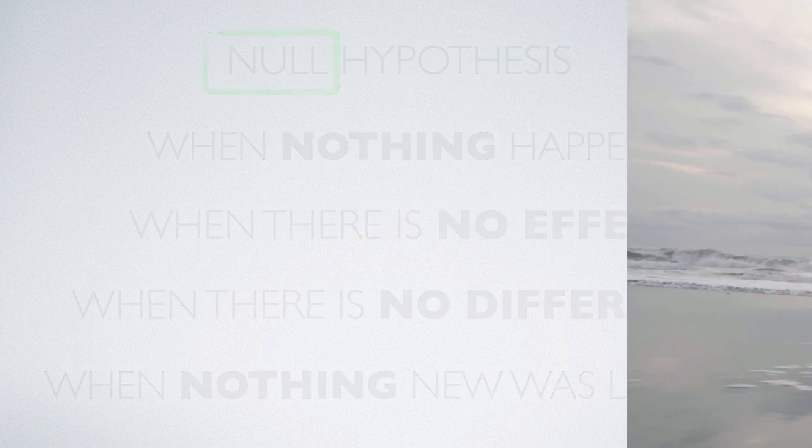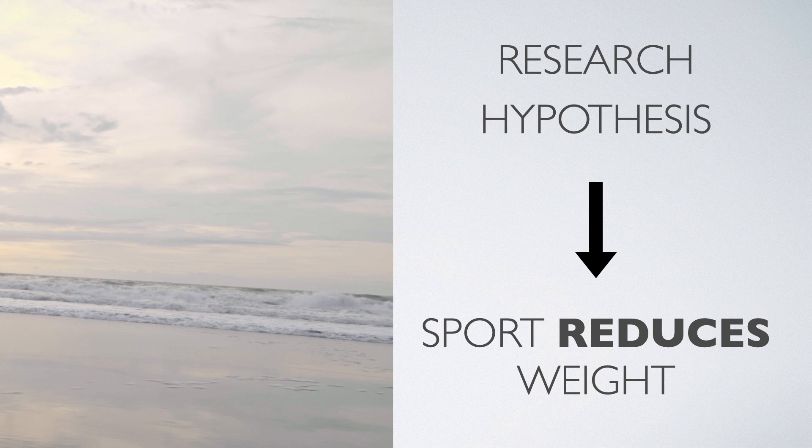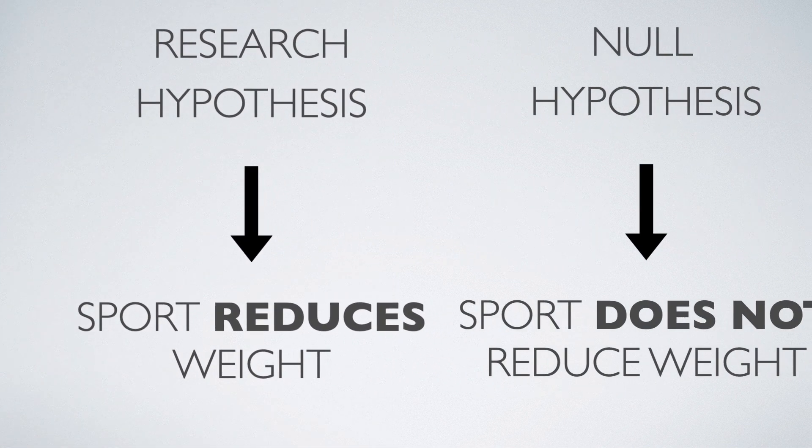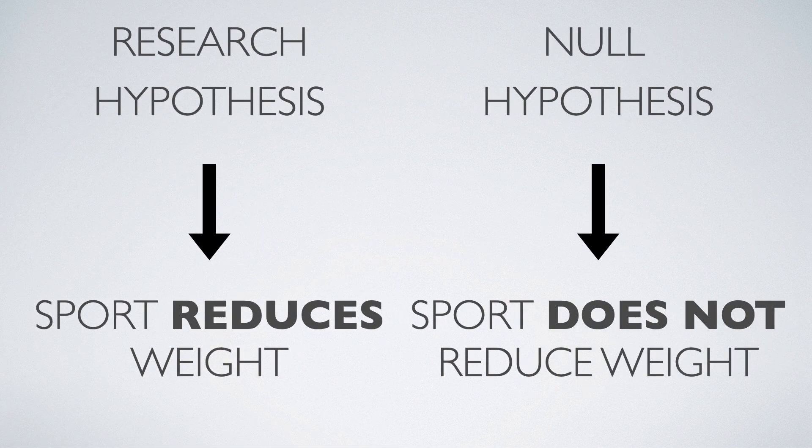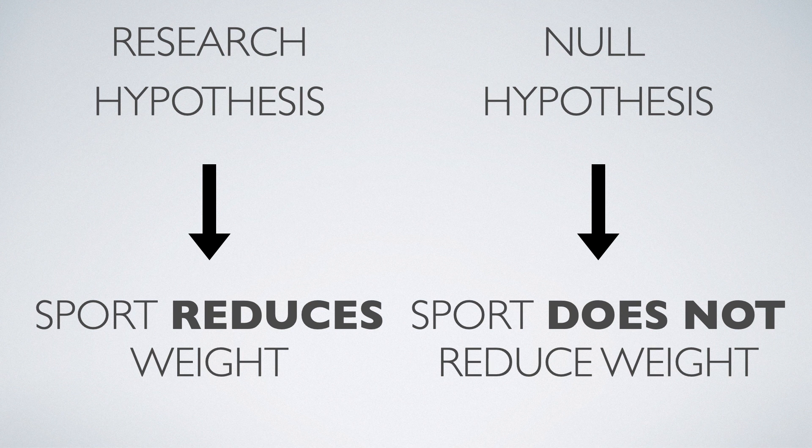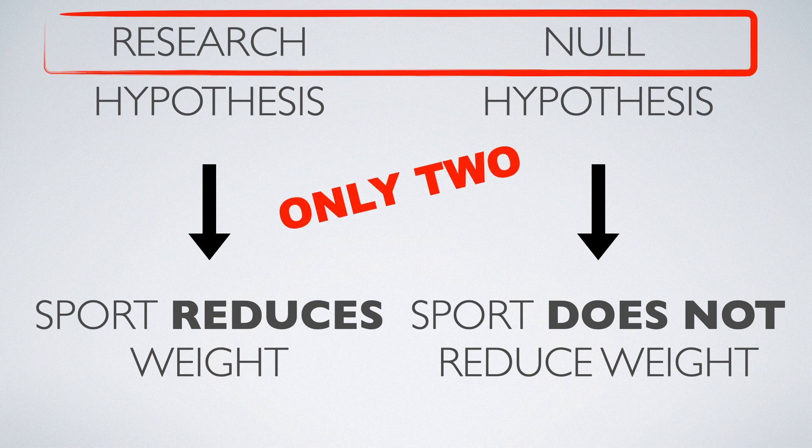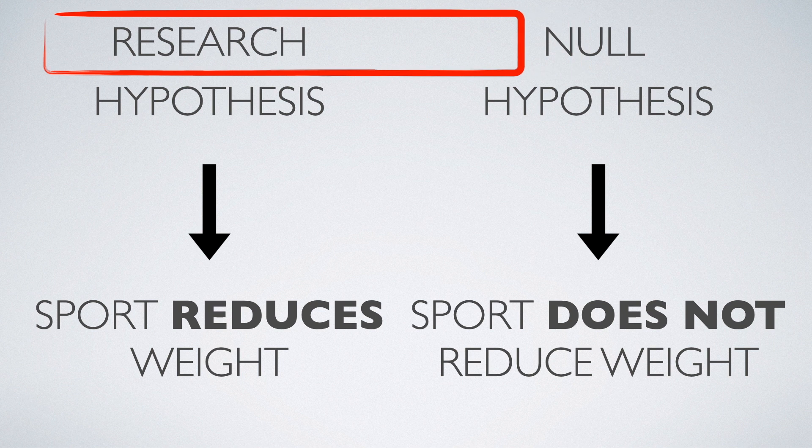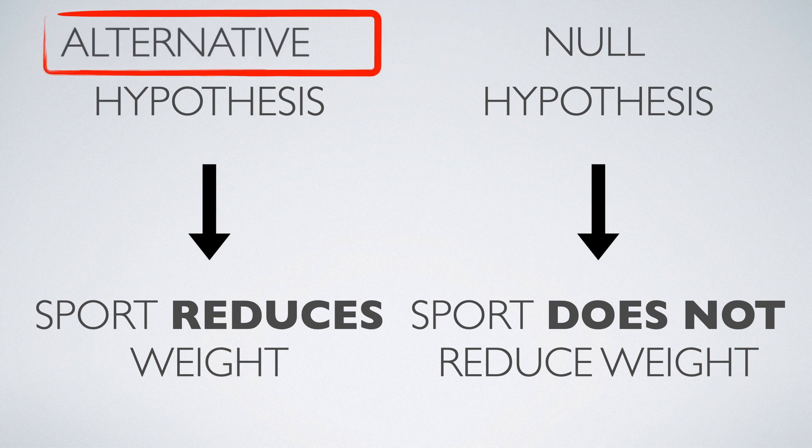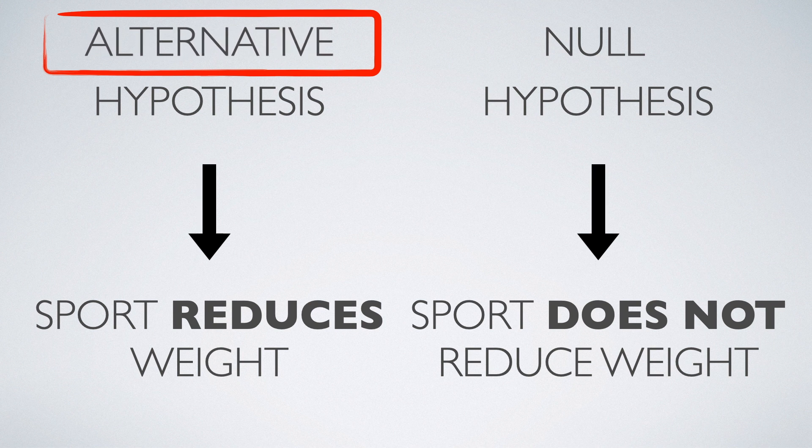For instance, if our research hypothesis is sport reduces weight, then our null hypothesis is sport does not reduce weight. So we actually need only these two hypotheses to make any of our claims solid. And since our research hypothesis is the only alternative to the null, it is often called the alternative hypothesis.